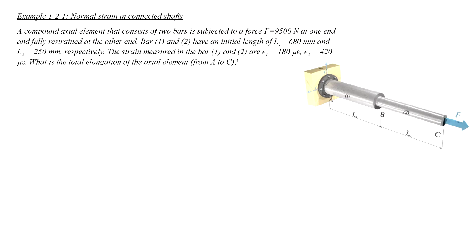The first example is a compound axial element that consists of two bars subjected to a force F at the right end, restrained at the left end. The length of each of the two bars is provided, and the amount of strain is measured in each of the two segments. We want to determine the total elongation of the system from A to C.